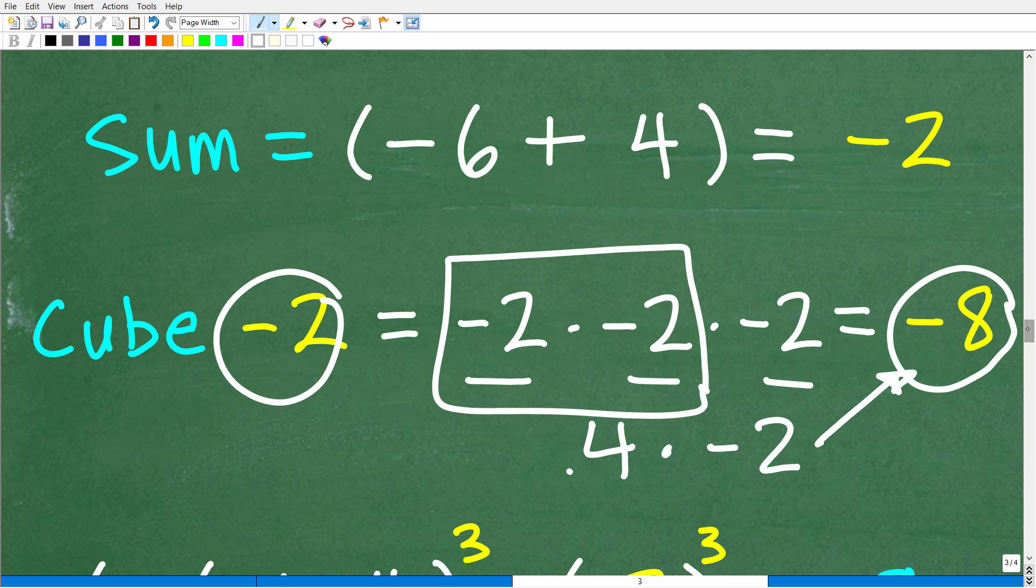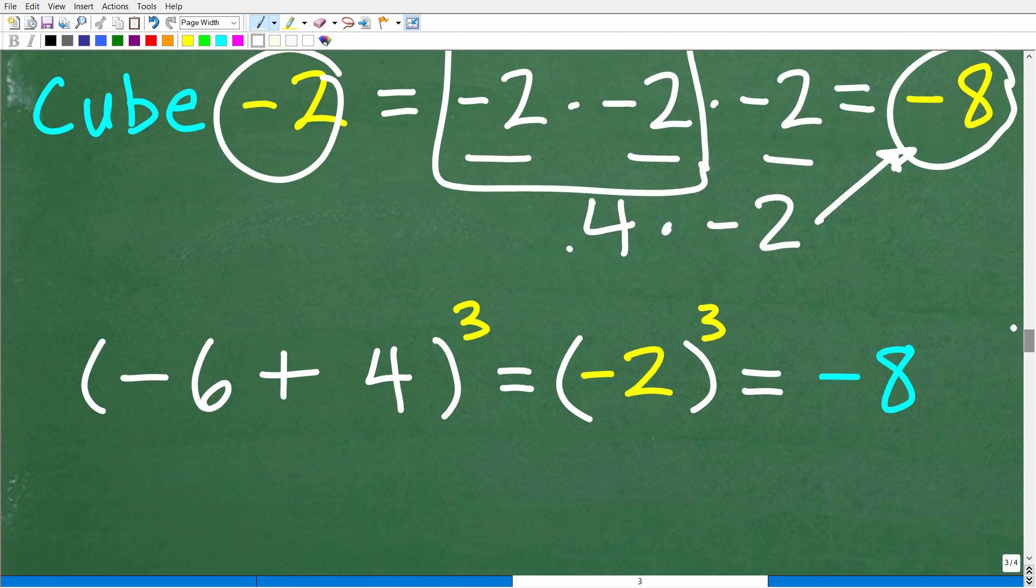Alright, so another way you can kind of think of this problem is this expression here. So this is the cube of the sum of negative 6 and 4. Alright, so here we have parentheses. Again, remember I said put those sums and differences in parentheses. So those of you that remember the order of operations, we have to do what's inside of parentheses first. So negative 6 plus 4 is negative 2. Negative 2 cubed is a negative 2 times negative 2 times negative 2, which is negative 8.